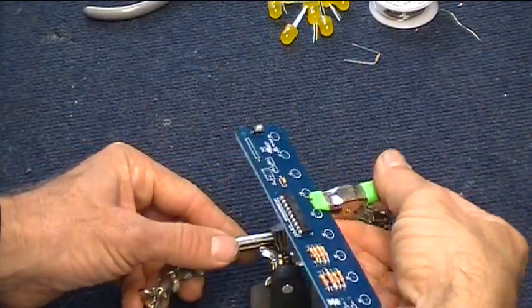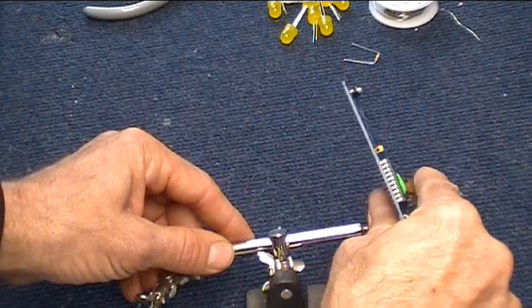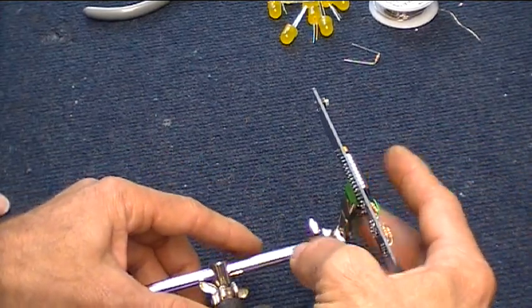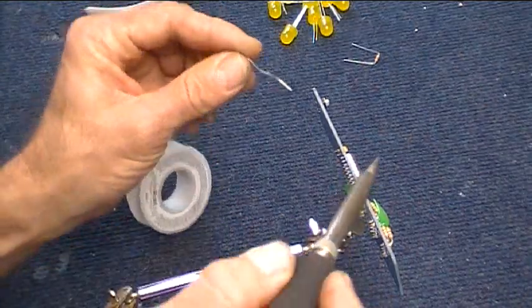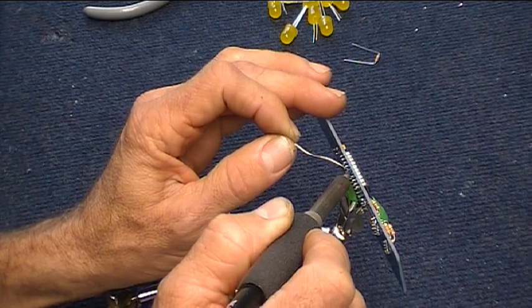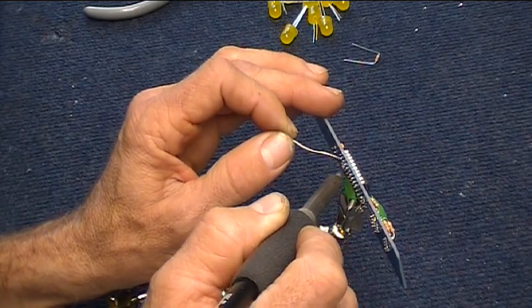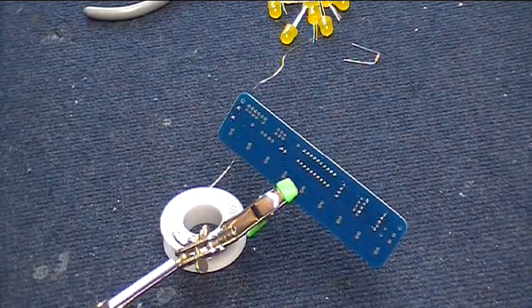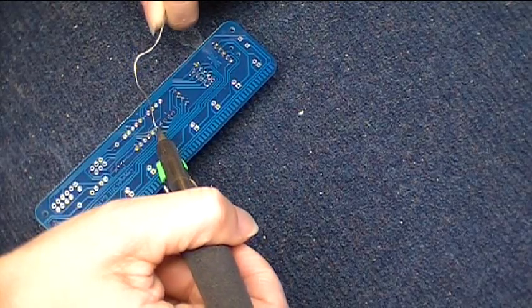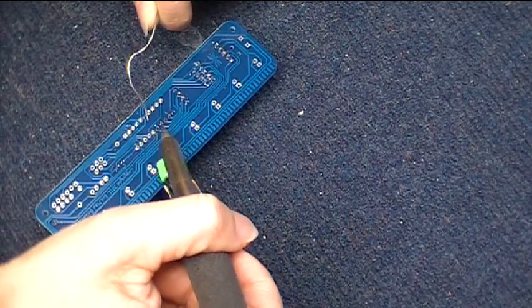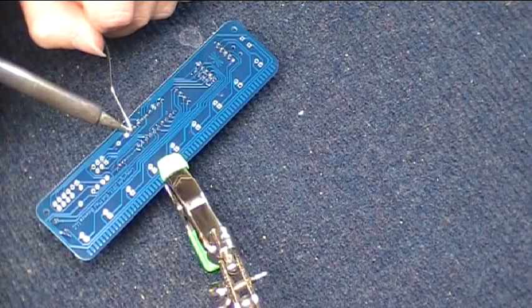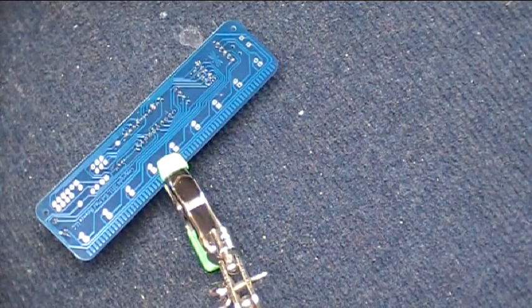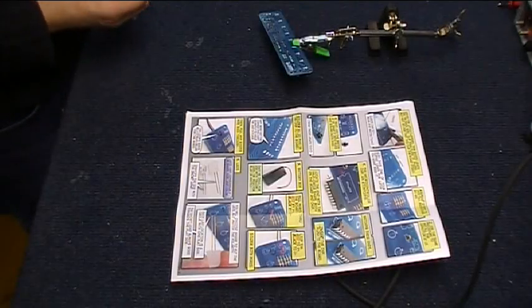Solder all 20 pins. I'll show you a little trick with these, Lisa, because they can just fall right out when you flip the board over and they don't have long enough leads to really bend. What you can do is set it vertical like that and then take the solder and just very carefully do one pin only. That's it. That'll keep it in place for you. Now you can go ahead and flip it over all the way and finish up the soldering. We did all 20 pins.